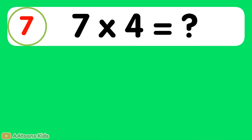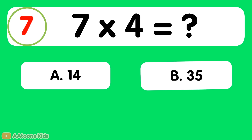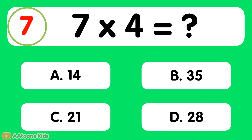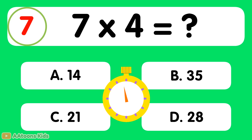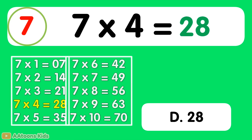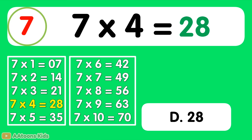7 times 4 is equal to... 28. 7 times 4 is 28.